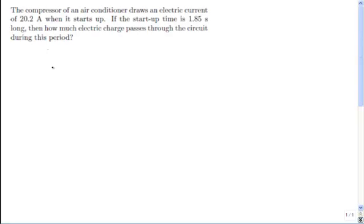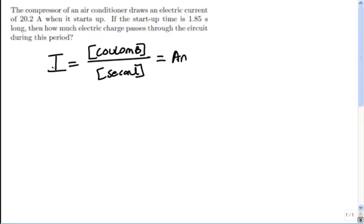So current is I, given the symbol I, which is equal to a Coulomb, or the measure of Coulombs, per second. So it's a charge per unit time. This is going to give us an amp.